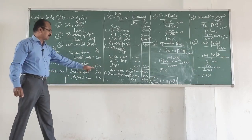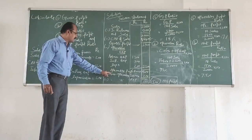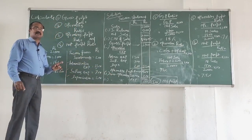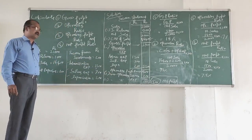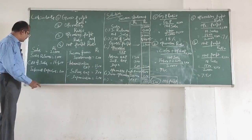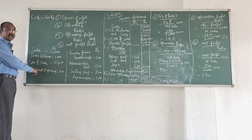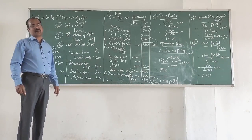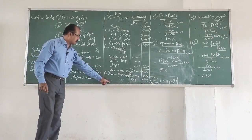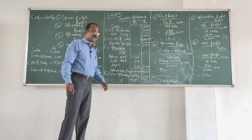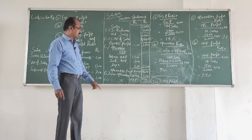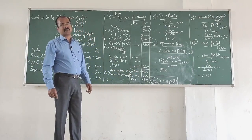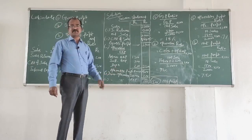In this problem, income from investments is a non-operating income and is added to the operating profit. We then subtract non-operating expenses: interest expenses of 100 rupees is non-operating expenditure. After subtracting that, we finally get 1,500 rupees as the net profit.